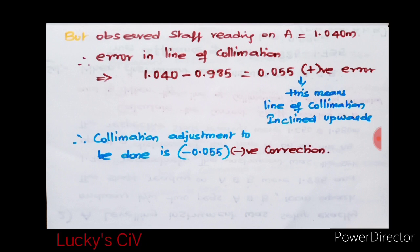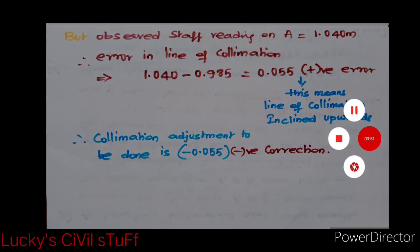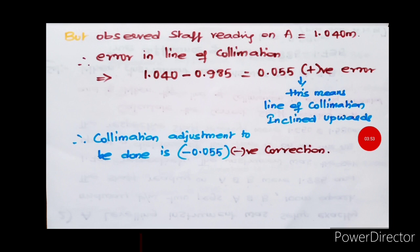The error in line of collimation is observed staff reading minus actual staff reading. Now you got a positive error. This means the line of collimation is inclined upwards, so the collimation adjustment to be done is minus 0.055.